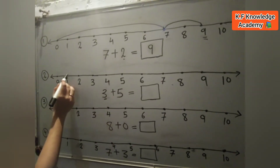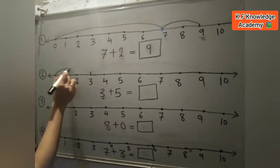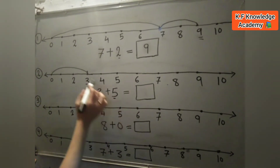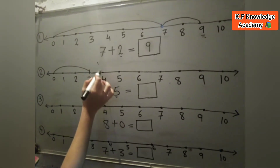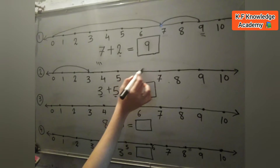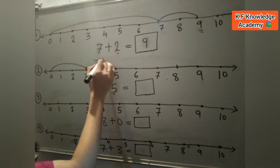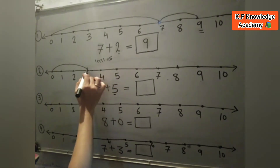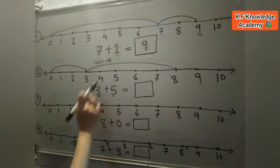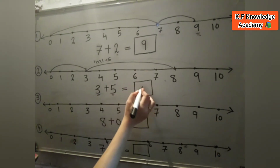Next one is 3 plus 5 is equal to. We match 0 to 3, then count 5 numbers: 3 to 4 is 1, 4 to 5 is 2, 5 to 6 is 3, 6 to 7 is 4, and 7 to 8 is 5. So we match 3 numbers to 8 — meaning 3 plus 5 is equal to 8.